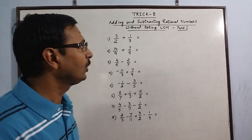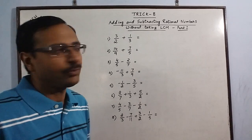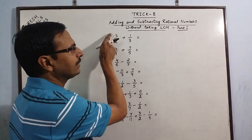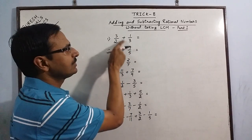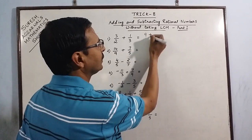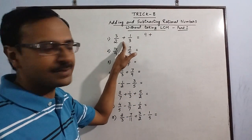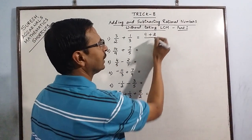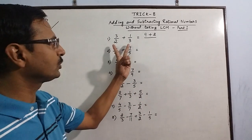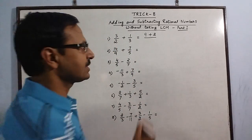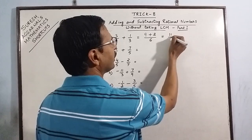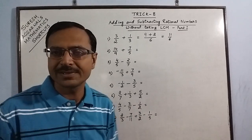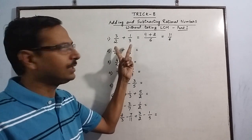The procedure we are going to adopt for adding these two rational numbers is to cross-multiply. 3 times 3 gives us 9; put the sign which is there between the two rational numbers, then multiply 2 times 1, which gives us 2. In the denominator we just have the product of the two denominators: 2 times 3 gives us 6. So the final answer is 11/6. There is no need to calculate the LCM because there is no common factor in these two denominators.